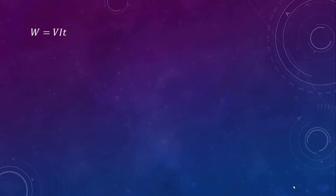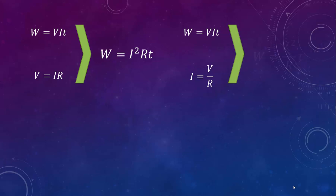So here's w equals v i t, and here is the form of Ohm's law, v equals i r. If we put these together, we could say that w equals i squared rt. There's that first work equation again, and here's another form of Ohm's law. If we put these two together, we can say that work equals v squared over r times t.